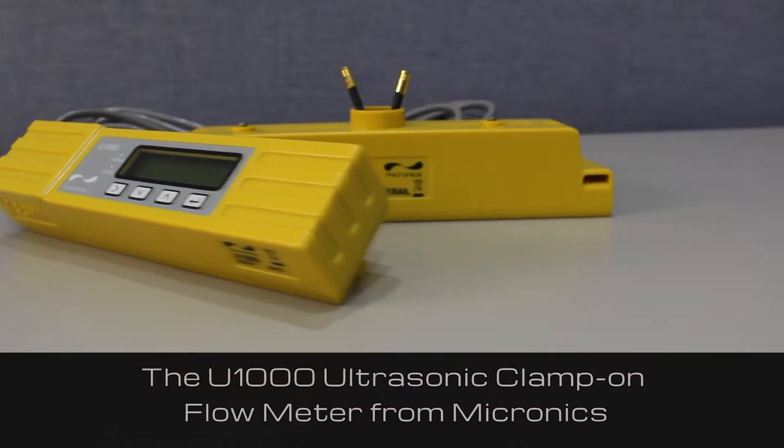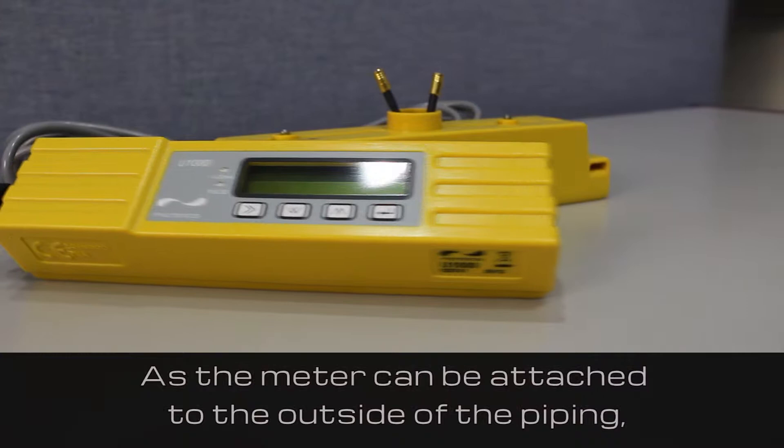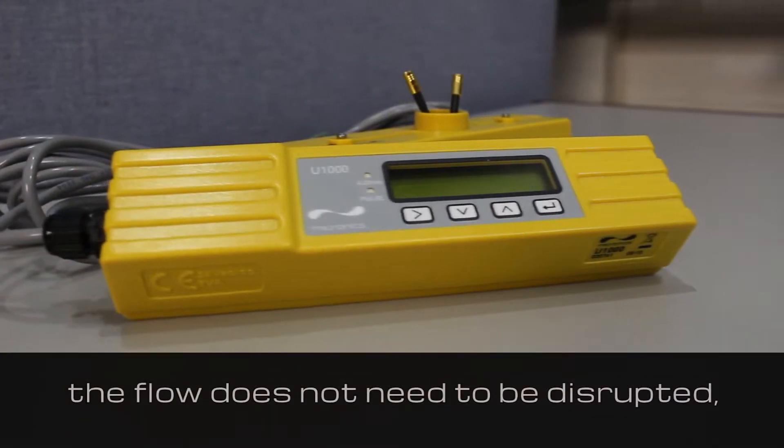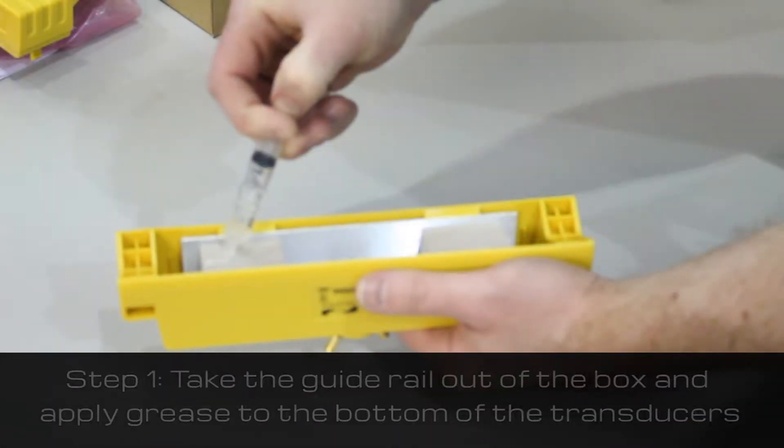The U1000 ultrasonic clamp-on flow meter from Micronix can be attached to the outside of the piping, so the flow does not need to be disrupted, making it reliable, easy to install, and easy to program.